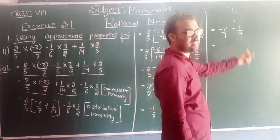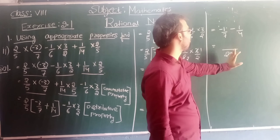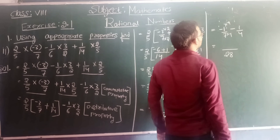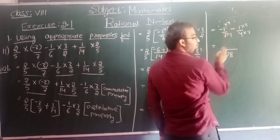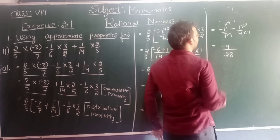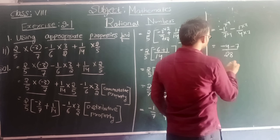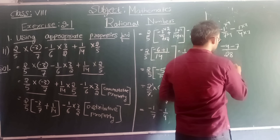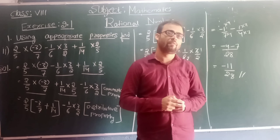Now find the LCM of 7 and 4 — which is 28. To make 7 into 28, multiply by 4; to make 4 into 28, multiply by 7. So 1 into minus 1 into 4 gives minus 4, and minus 1 into 7 gives minus 7. Minus 4 minus 7 is minus 11. So minus 11 divided by 28. This is the answer — when you solve this question, we get the answer as minus 11 by 28.